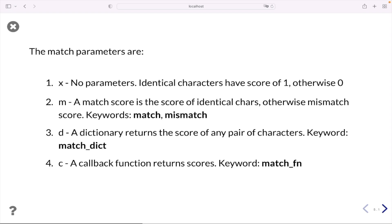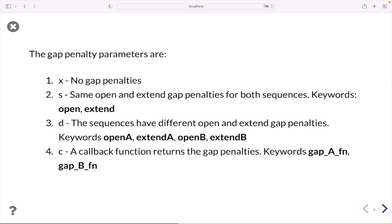The first character indicates the parameter for match scoring and the second indicates the parameter for gap penalties. Match parameters can be x, m, d, or c. Specifying x scores identical characters as one, otherwise zero. Parameter m lets you define your own numbers for match and mismatch. You can also provide scoring as a dictionary (d) or callback function (c). Similarly for gap penalties: x means no penalty for gaps; s lets you give different penalties for open versus extended gaps; d allows different open and gap penalties for each sequence; and c defines a callback function returning gap penalties.